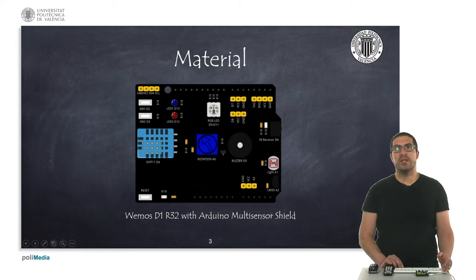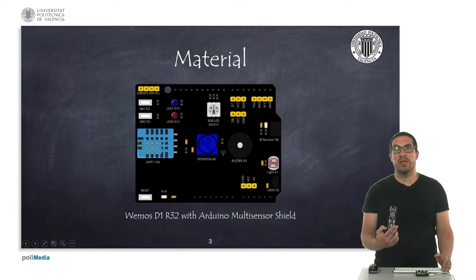This is the material that we will use for this presentation. As usual, we are using the WEMUS D1 R32 together with the Arduino multi-sensor shield. In particular, we're going to focus on using the infrared receiver which is connected to pin D6 and also we're going to use an infrared remote controller as you can see here.